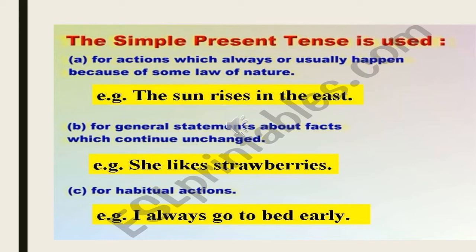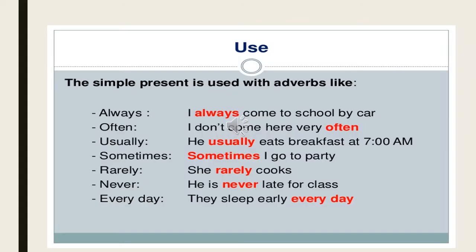General statements of fact also use simple present tense. For example: she likes strawberries — today, yesterday, and tomorrow. Something that is her habit. She drinks milk in the morning every day. She goes to school by car. Daily happenings, universal truths, and habits all normally take the form of simple present tense.